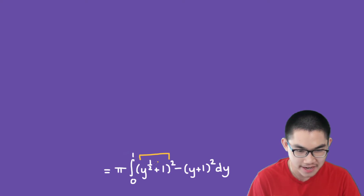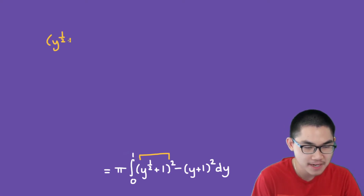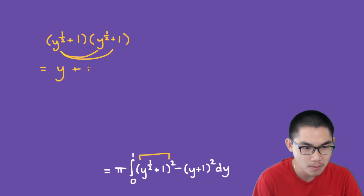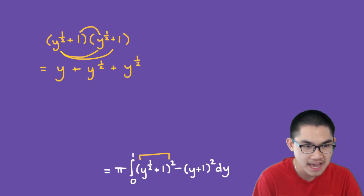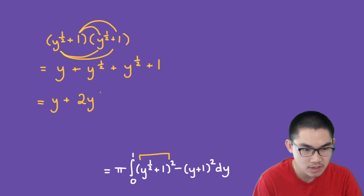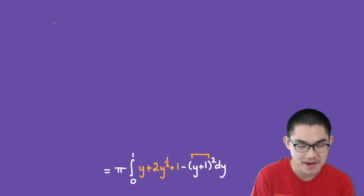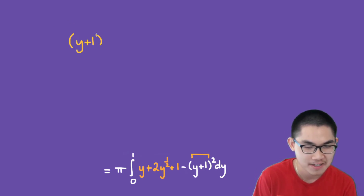Let's expand each term. (y^(1/2) + 1)² equals y^(1/2) times y^(1/2) plus y^(1/2) plus y^(1/2) plus 1, which simplifies to y plus 2y^(1/2) plus 1. And (y+1)² expands to y² plus 2y plus 1.